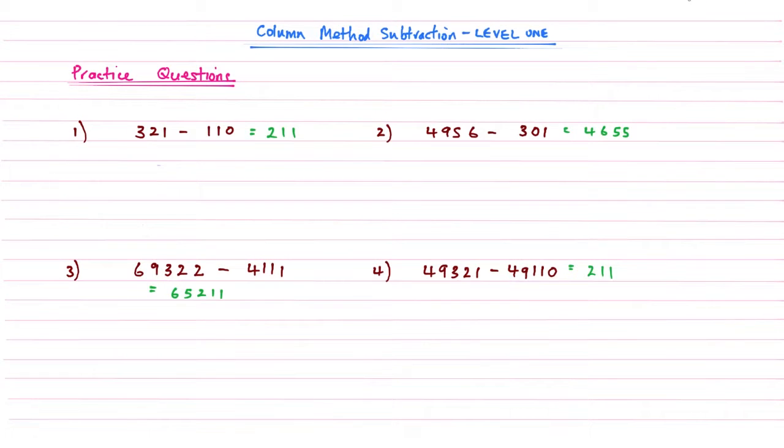Hi, so here is the answer walkthrough video for our lesson column method subtraction level 1. Here are your quick answers: question 1 is 211, question 2 is 4,655, question 3 is 65,211, and question 4 is 211.